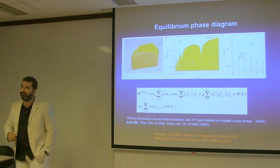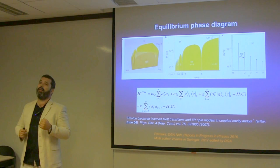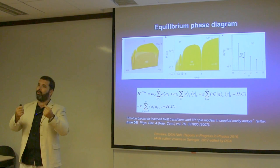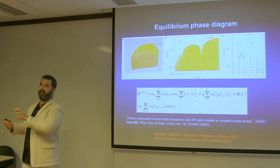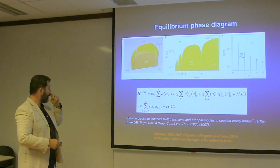It looks like a Bose-Hubbard type of thing. If you do mean field theory on this model — decoupling the hopping operators and calculating Mott lobes and phase diagrams — you get something similar to Bose-Hubbard but with an extra axis: the detuning between the atom and the cavity, because the hopping particles are not just bosons. Photons hop, but atomic excitations are fixed in each cavity, and the total polariton excitation is what follows this Bose-Hubbard physics.